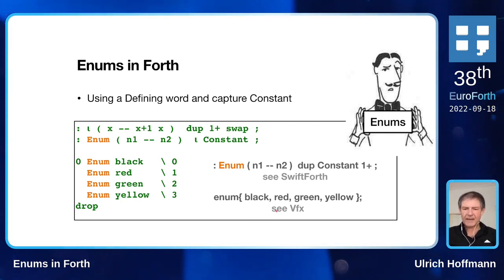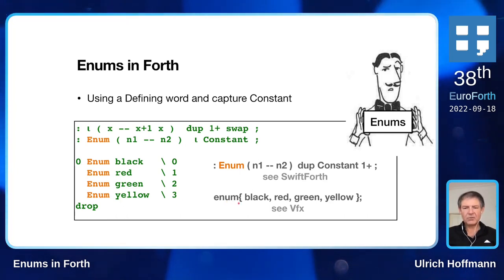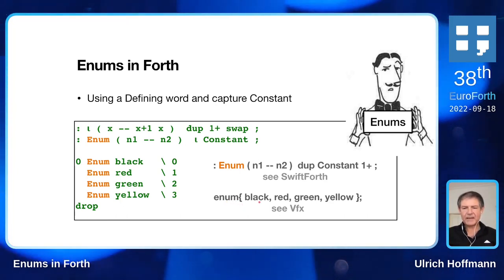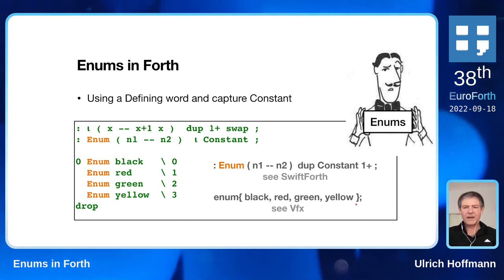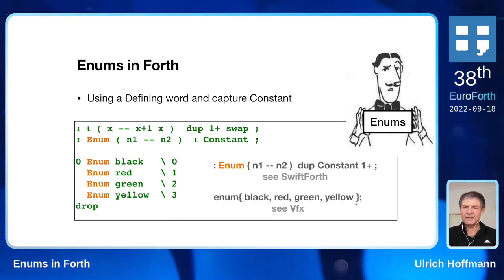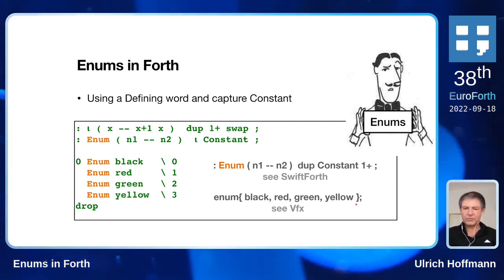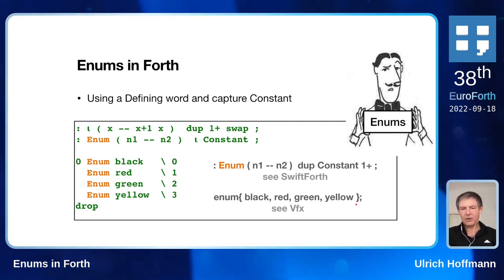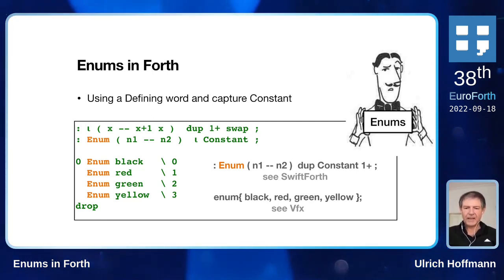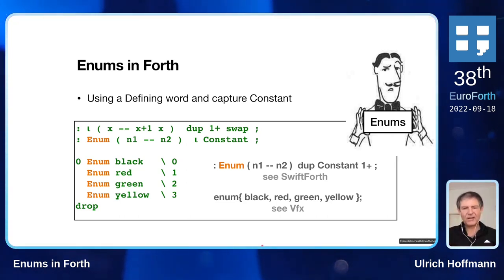And if you look at VFX Forth — notation matters — you get syntax like this: `enums { black, red, green, yellow }` to achieve the same effect. It defines four constants: zero, one, two, three — black, red, green, and yellow — that you can use further on. And that's my lightning talk, or impromptu talk. Thank you very much for listening.